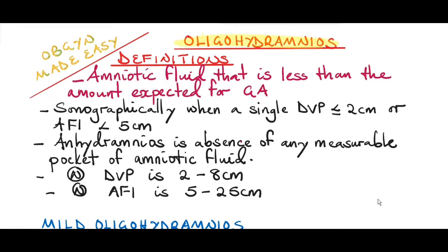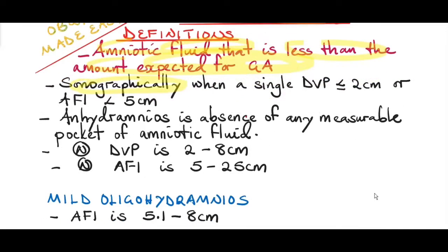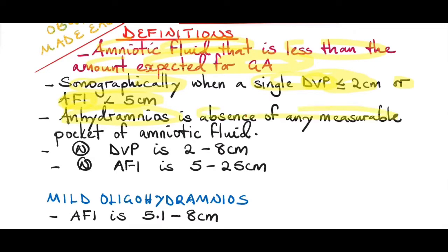So what is oligohydramnios? This is defined as amniotic fluid that is less than the amount expected for the gestational age. Based on ultrasound, this is when a single deepest vertical pool is less than or equal to 2 centimeters, or the amniotic fluid index is less than 5 centimeters. Anhydramnios is the absence of any measurable pocket of amniotic fluid. The normal deepest vertical pocket is 2 to 8 centimeters, and the normal amniotic fluid index is 5 to 25 centimeters.